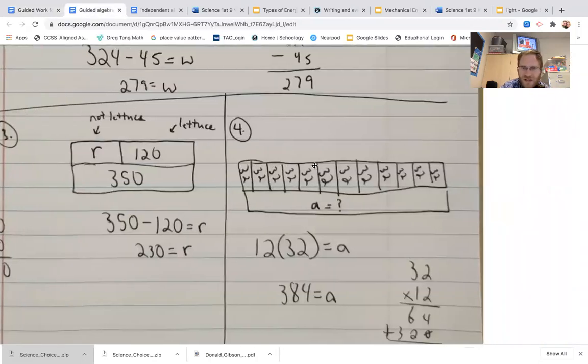So here we have 12 sets of 32, 12 sets of 32, and that all together would equal A, which is our unknown. So 12 times 32 equals A, and 12 times 32 is 384.